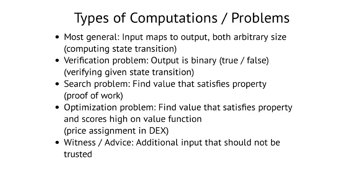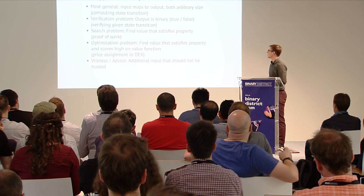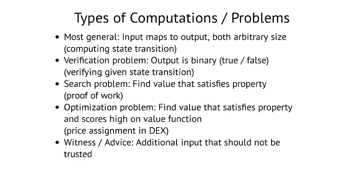These computations are all of a different type, so let's get some structure. The most general form of a computation takes a bunch of inputs and maps them to outputs, both of which can be arbitrary size — and an example is computing a state transition: state plus transaction yields new state. Another way is to simplify to verification problems, also called decision problems, where the input can be arbitrary but the output is always binary — always either true or false.